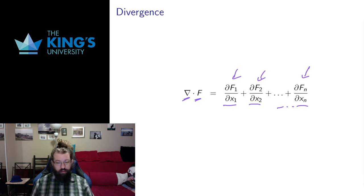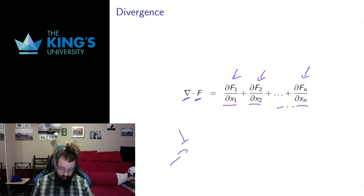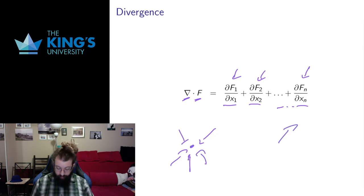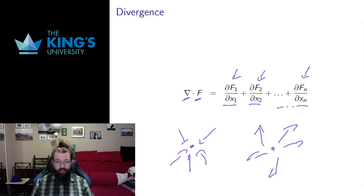Divergence measures the tendency of the vector field to gather together or to disperse. Something where all the vectors are pointing together is going to have a large positive divergence. Something where all the vectors are pointing away is going to have a large negative divergence. Divergence is the tendency of a vector field to gather or disperse.